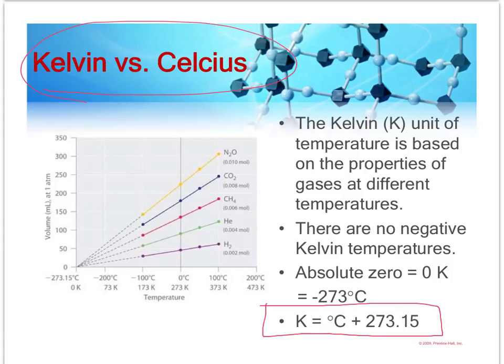There are no negative Kelvin measurements. Okay, so if you see a negative temperature, it is Celsius. Kelvin starts at zero. The Kelvin temperature will always be larger than the Celsius. Notice how you get from Celsius to Kelvin is you add 273 to whatever the Celsius value is.